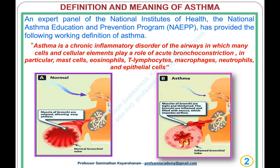Definition and Meaning of Asthma. An expert panel of the National Institutes of Health, the National Asthma Education and Prevention Programme (NAEPP), has provided the following working definition: Asthma is a chronic inflammatory disorder of the airways in which many cells and cellular elements play a role in acute bronchoconstriction — in particular, mast cells, eosinophils, T lymphocytes, macrophages, neutrophils, and epithelial cells.